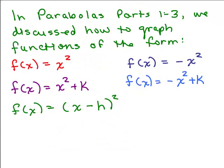In parts 1 to 3 of parabolas, we discussed how to graph functions of the following 5 forms. We talked about when a parabola opened upward or downward, that depended on the coefficient of x squared. When it was positive, it went up. When it was negative, it went down, and we talked about the vertex and the axis of symmetry of the parabola.